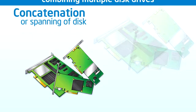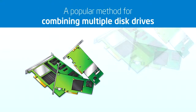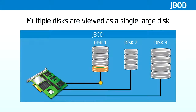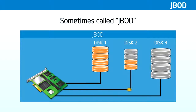Concatenation or spanning of disks is not one of the numbered RAID levels, but it's a popular method for combining multiple physical disk drives into a single virtual disk. It provides no data redundancy. As the name implies, disks are merely concatenated together, so they appear to be a single large disk. This mode is sometimes called JBOD or just a bunch of disks. Performance is decreased because drives cannot be used concurrently. It's most commonly used when you have odd-sized drives that need to be combined into a single virtual disk.